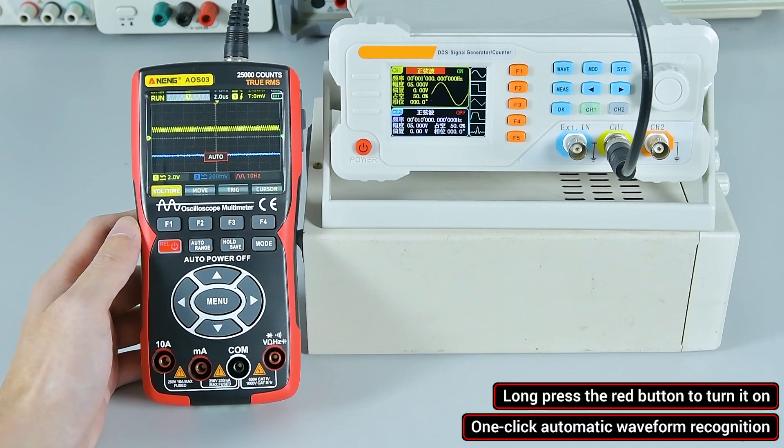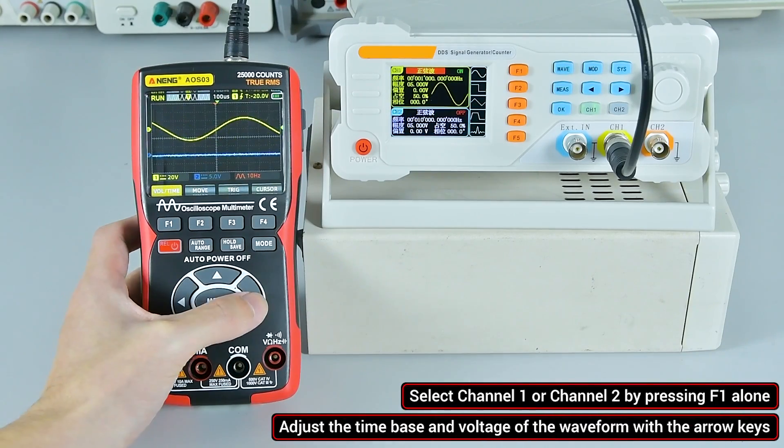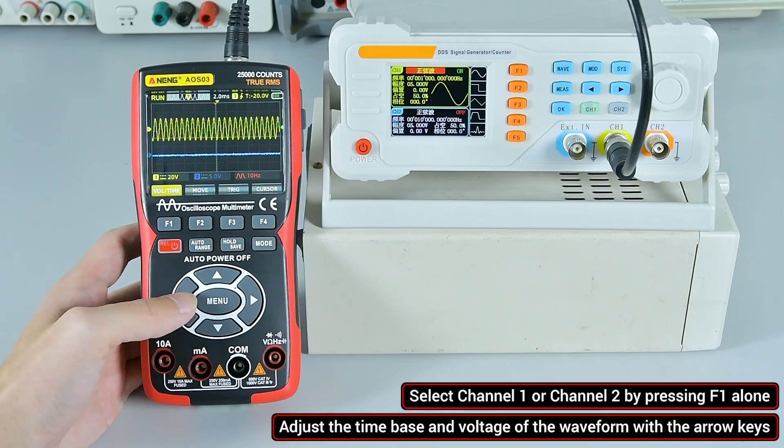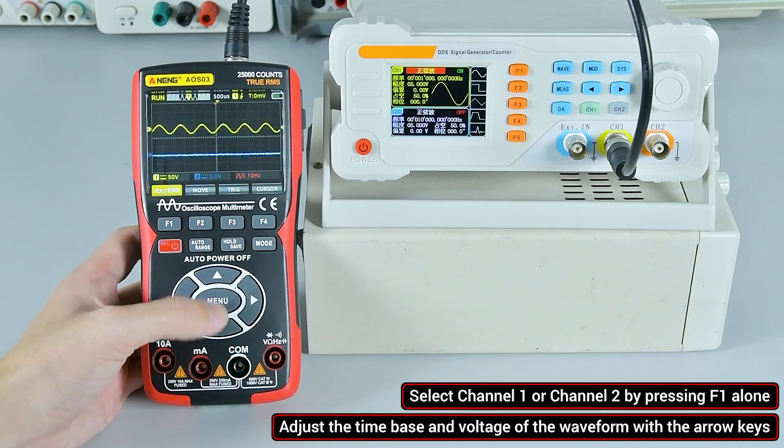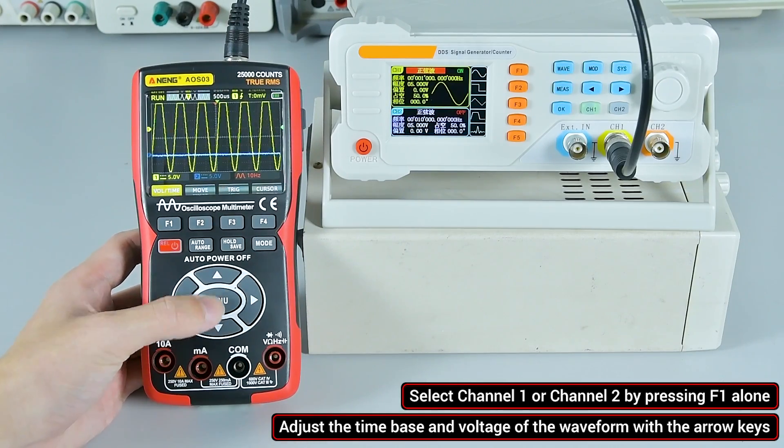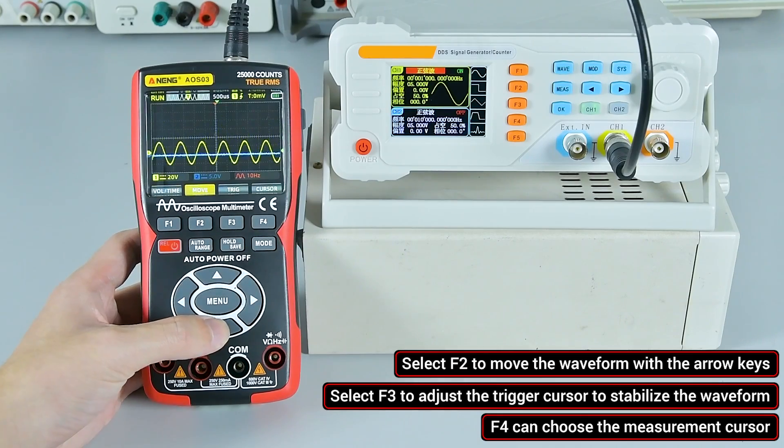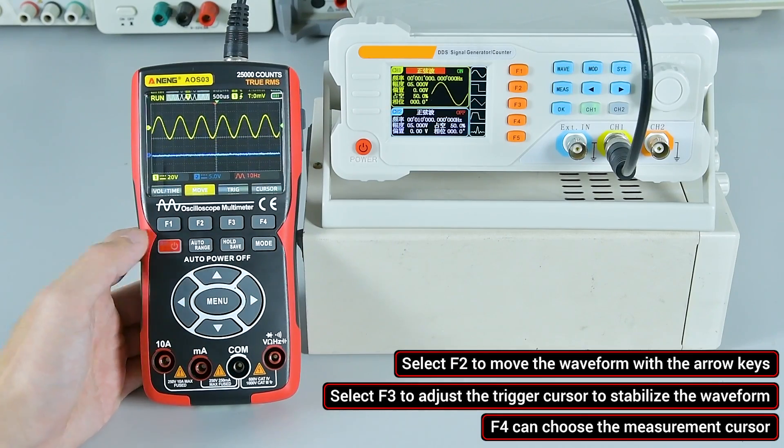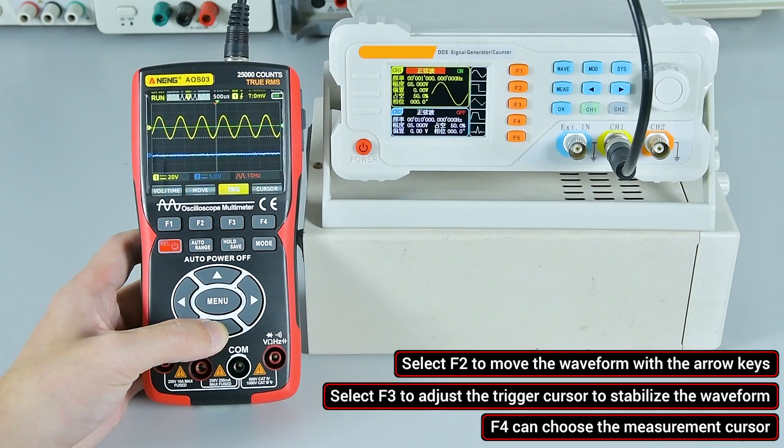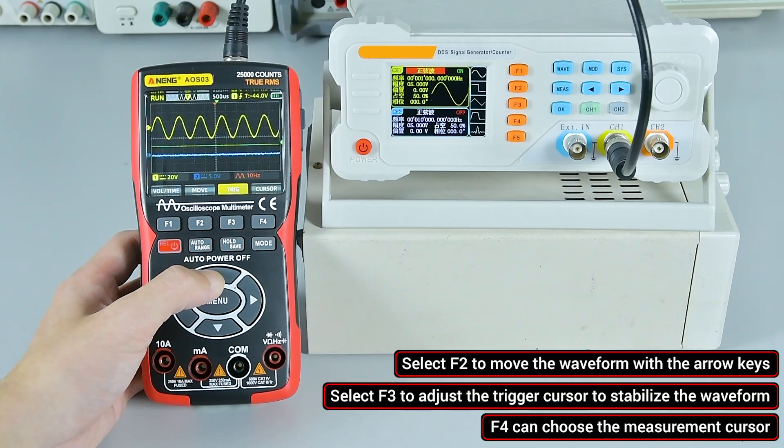Automatic waveform recognition with one click. Select channel 1 or channel 2 by pressing F1 alone. Adjust the time base and voltage of the waveform with the arrow keys. Select F2 to move the waveform with the arrow keys. Select F3 to adjust the trigger cursor to stabilize the waveform.